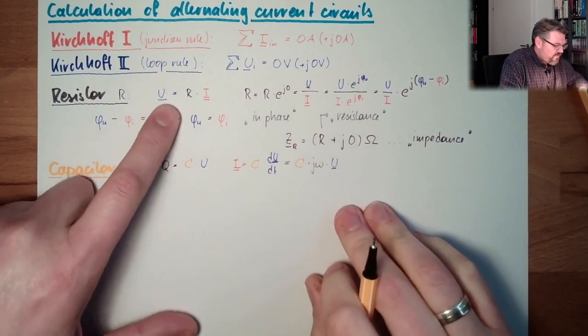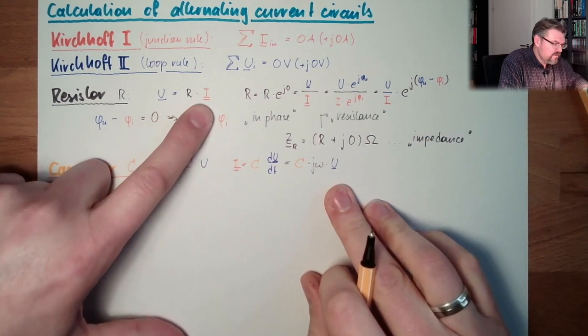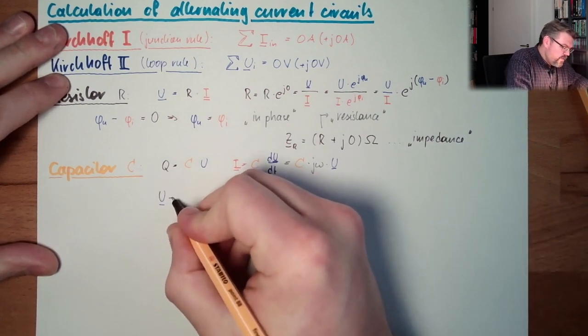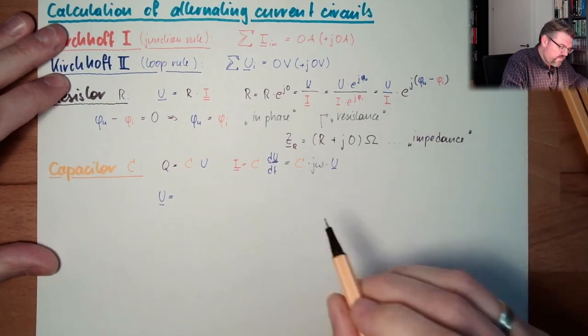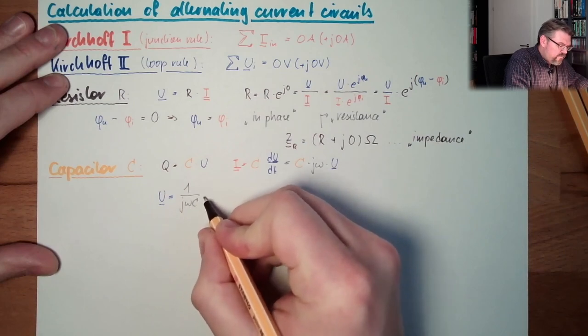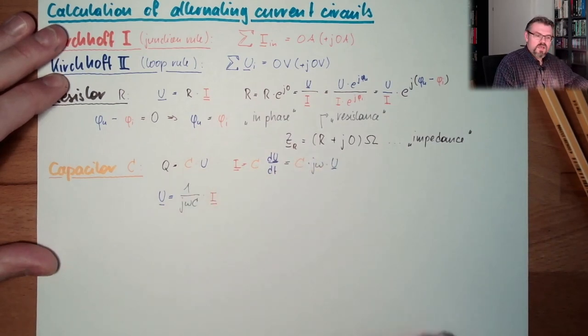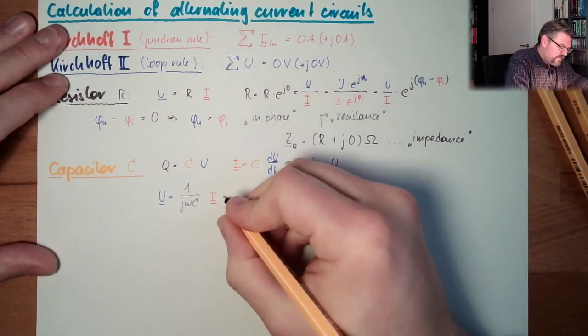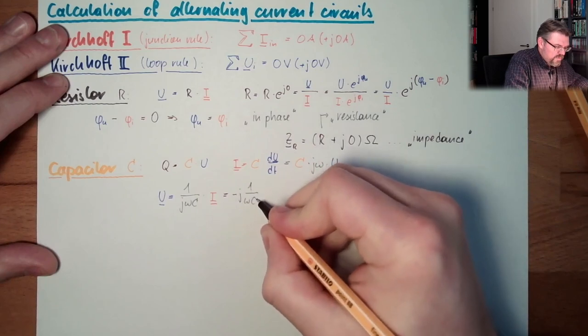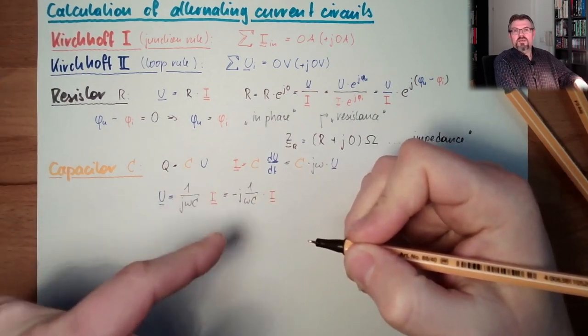Now, I want to have it in this form. U equals something multiplied by I, to simulate the Ohm's law somehow. So let's write it down. U equals, and now we have this to the other side, 1 divided by J omega C multiplied by I. And now, I do something. I just say this is exactly the same as minus J, 1 over omega C multiplied by I. I just tell you, 1 divided by J is minus J.